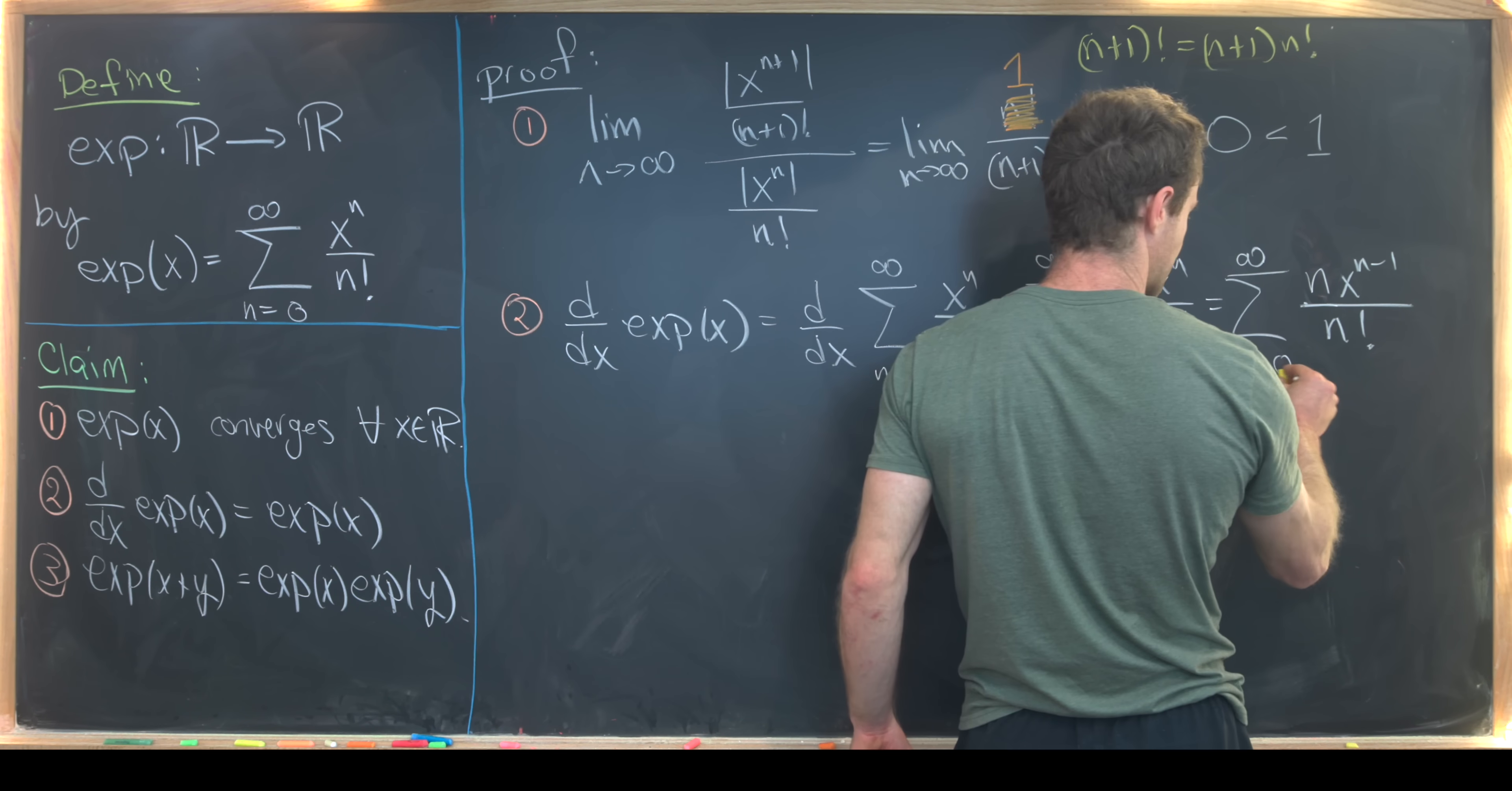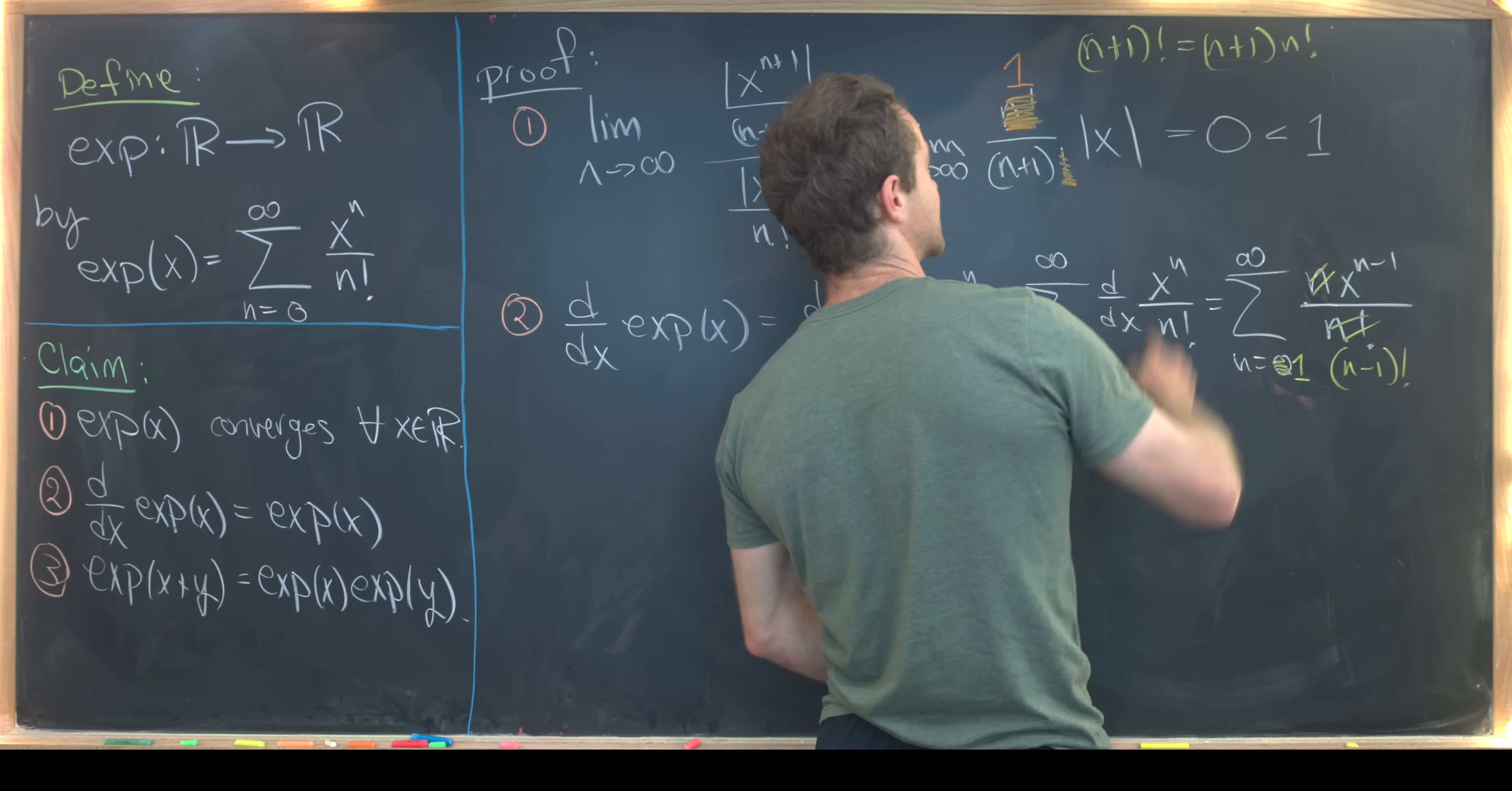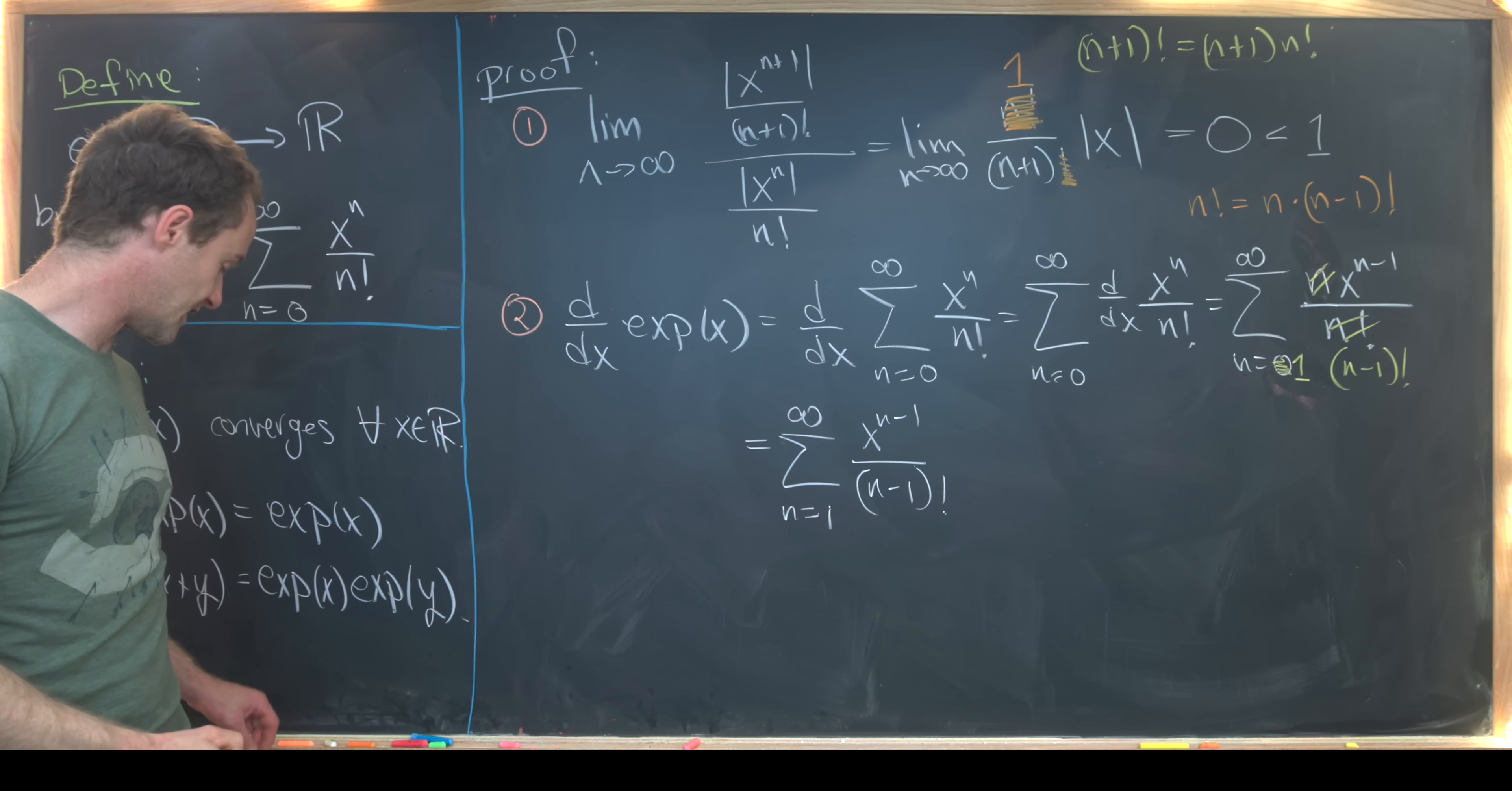So what we want to do is re-index to bring this n equals 0 term out. So I'll start by changing my starting point from 0 to 1. Notice that there's really no worries doing that because the first term was 0 in the first place. But now that we're starting at 1, we can do a little bit of a simplification. We can take this n here and cancel this n factorial down to (n-1) factorial. And again, that's from a similar calculation to this up here because n factorial is n times (n-1) factorial. So let's see what that leaves us with. We have this sum as n goes from 1 up to infinity of x to the n-1 over (n-1) factorial.